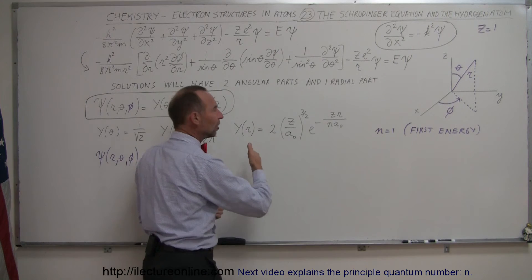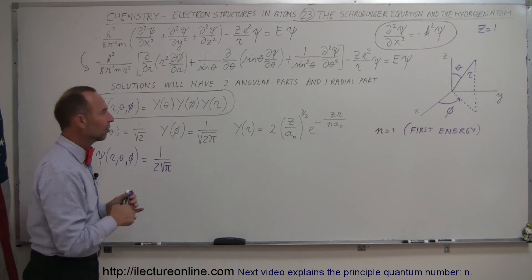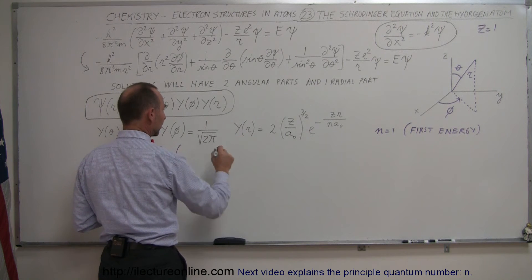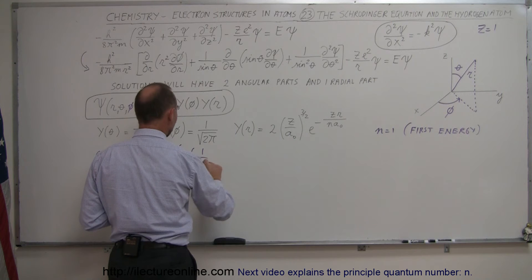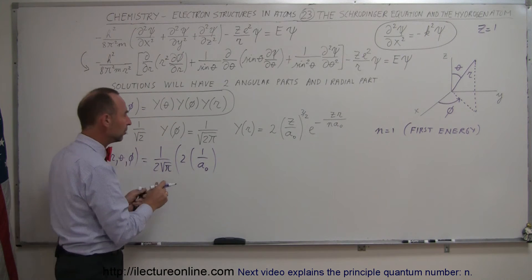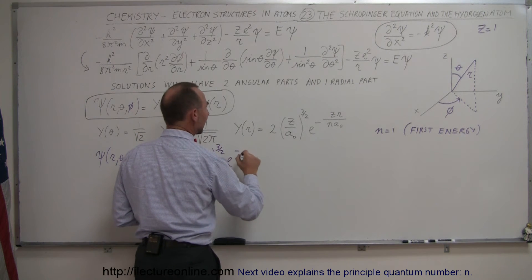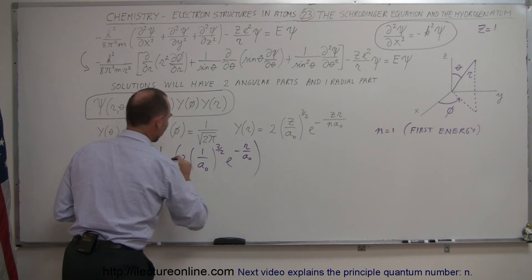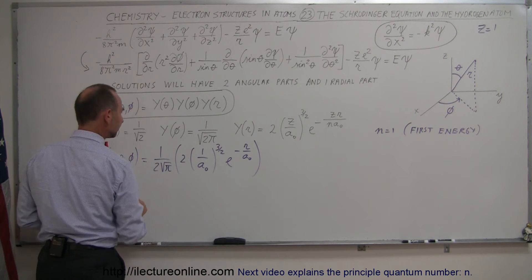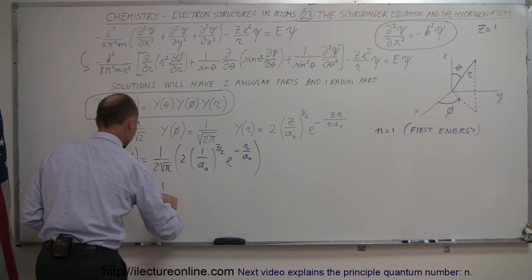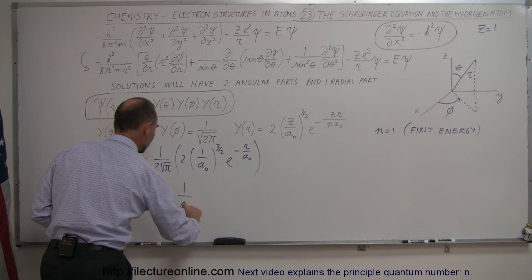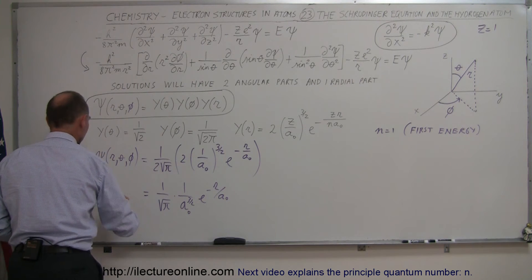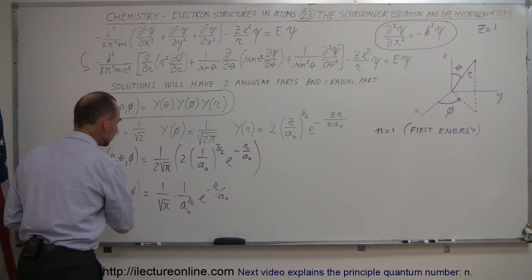But it does depend upon the radius. The position of the electron does depend on the radius, so let's take a look at this. The constants become 1, and the equation then becomes: we multiply times 2, times 1 over A sub-naught — where A sub-naught is the radius of the orbit — to the 3/2 power, times e to the minus 1 times R over A sub-naught. The 2 cancels out, and so this is equal to 1 over the square root of pi, times 1 over A sub-naught to the 3/2 power, times e to the minus R over A sub-naught.